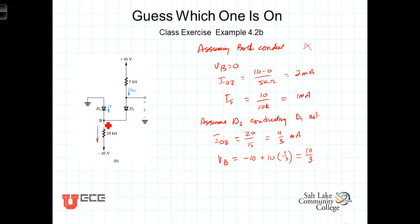So, if this voltage here was 10 thirds, and this is zero, that would, in fact, reverse bias this diode, and make it so that D1 was not conducting, which was what our assumption was.